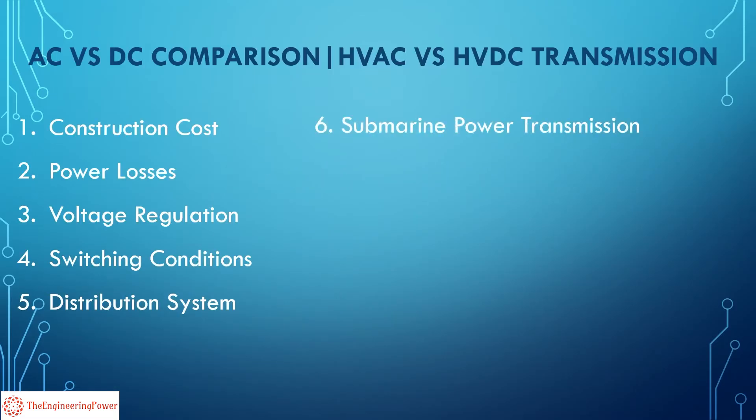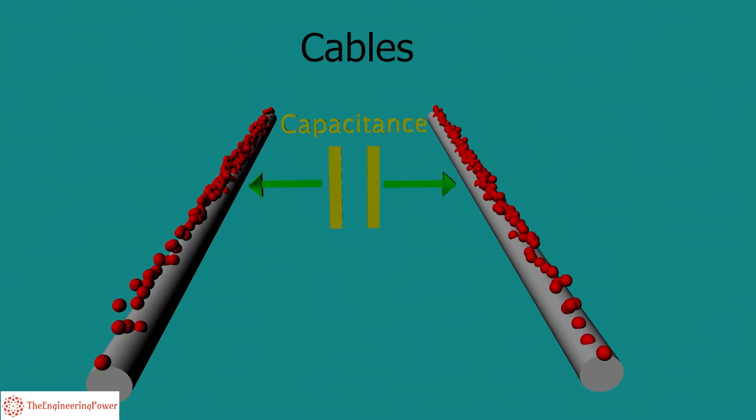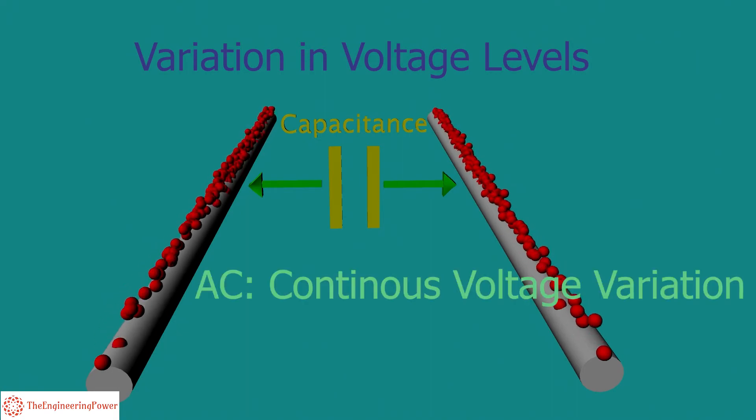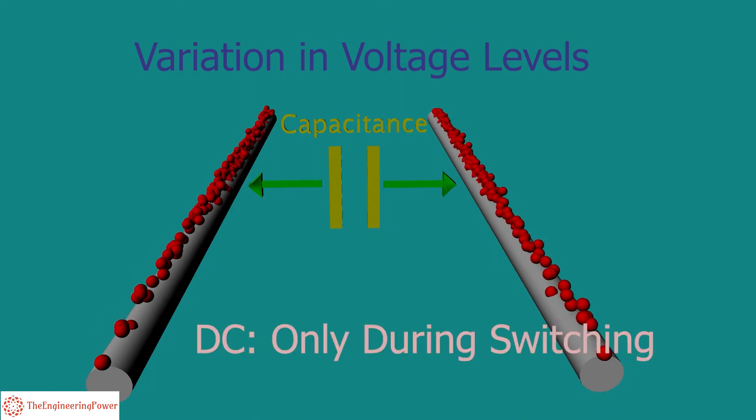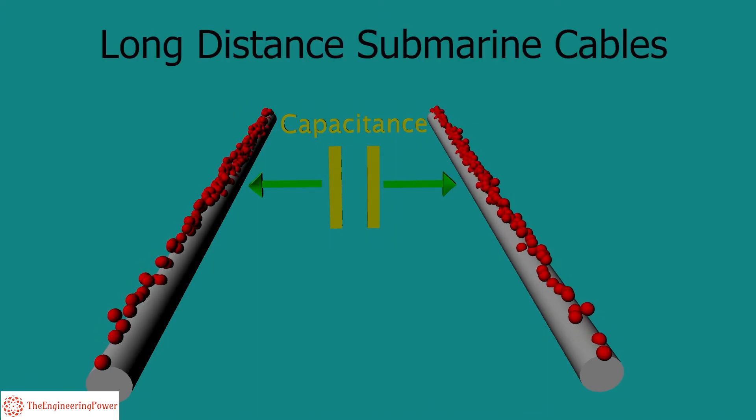Submarine power transmission. Cables are used for submarine power transmission. Capacitance is generated between two conductors that operate in parallel arrangement over long distances. The capacitance value is based on variation in voltage levels. In AC systems, this variation in voltage occurs continuously, whereas in DC system voltage variation only takes place during switching. Due to low capacitance effect, long-distance submarine cables use HVDC technology.